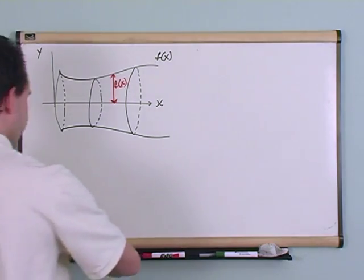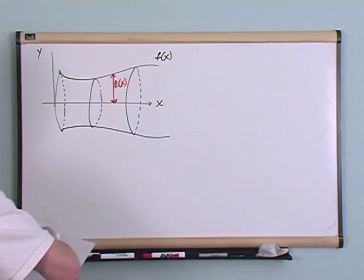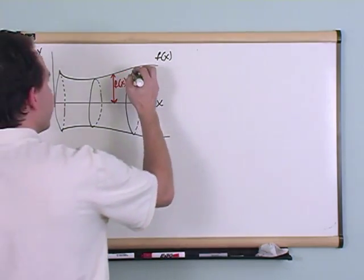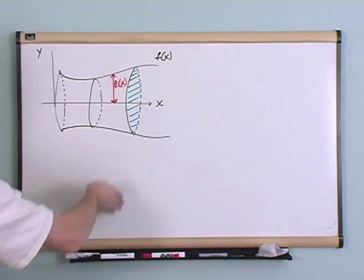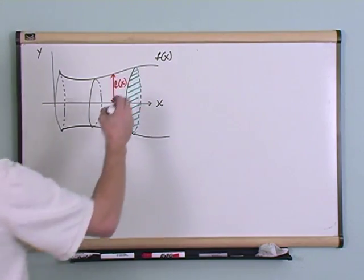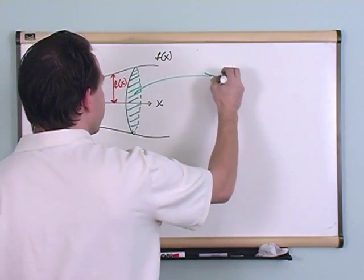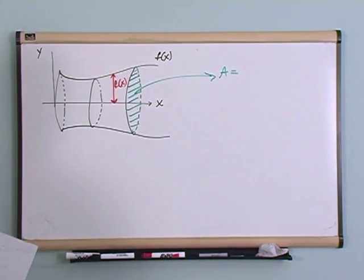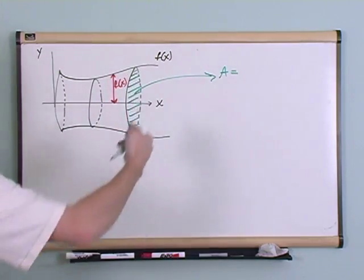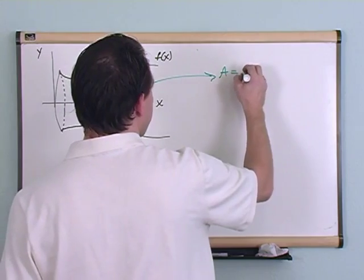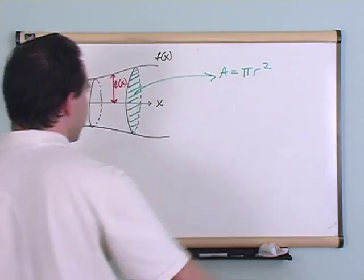So if I were to look at the area, forget about volume for a second. If I were to look at the area of this little slice, let's say I slice it right here, and I'm interested in the area. What's that going to equal? Well, in general, this is a circle, right? Because you've rotated it around in a circle. So the area of a circle is just pi r squared. That's the area of a circle.